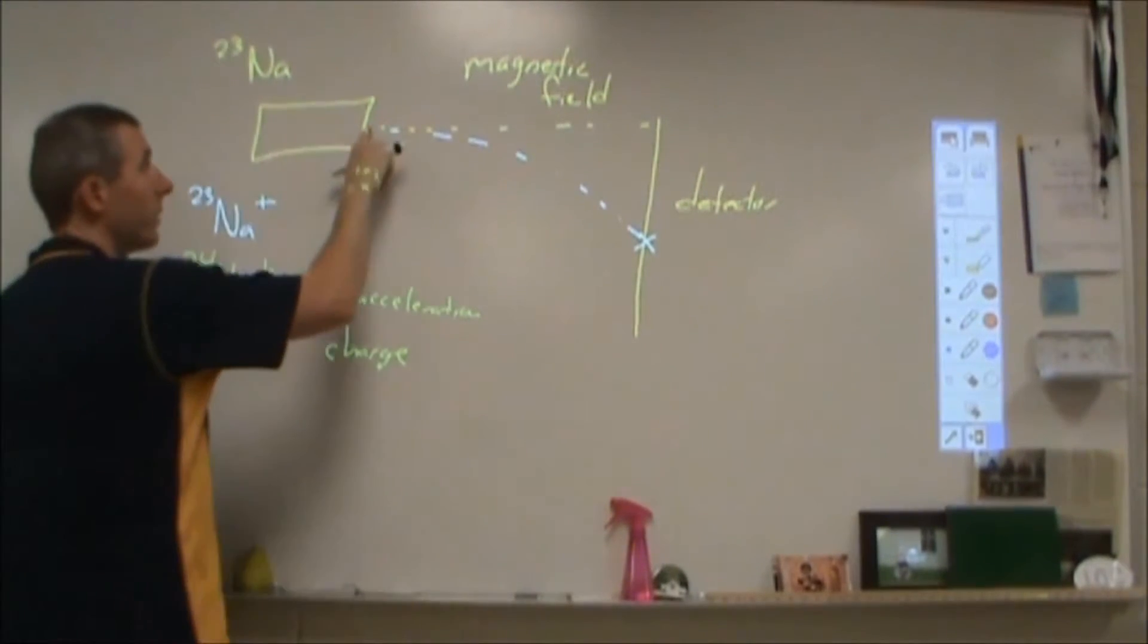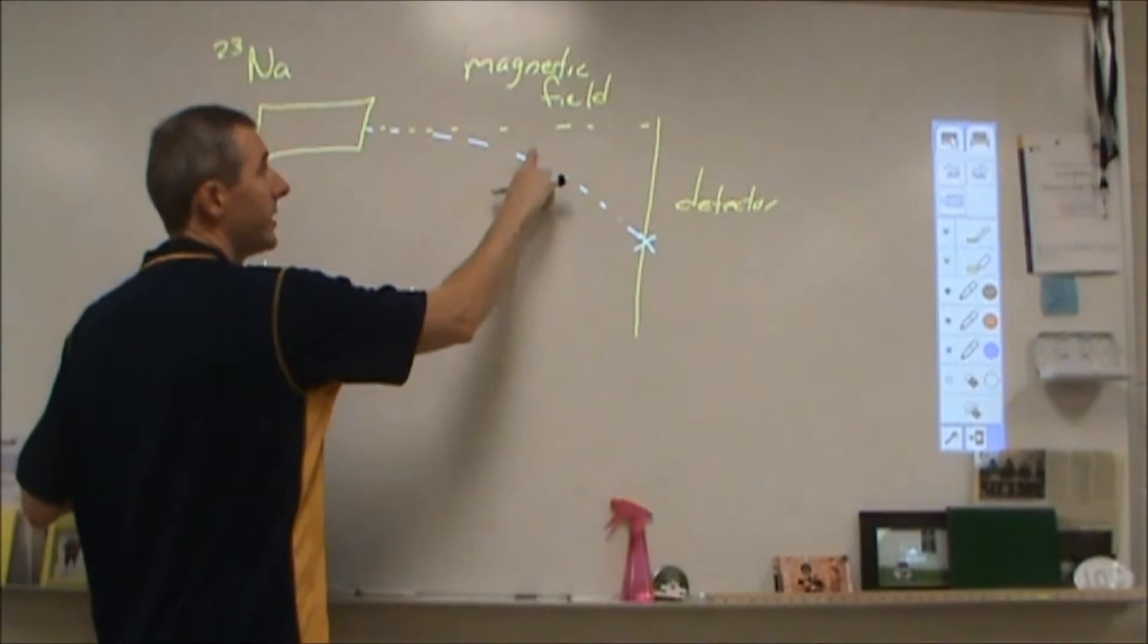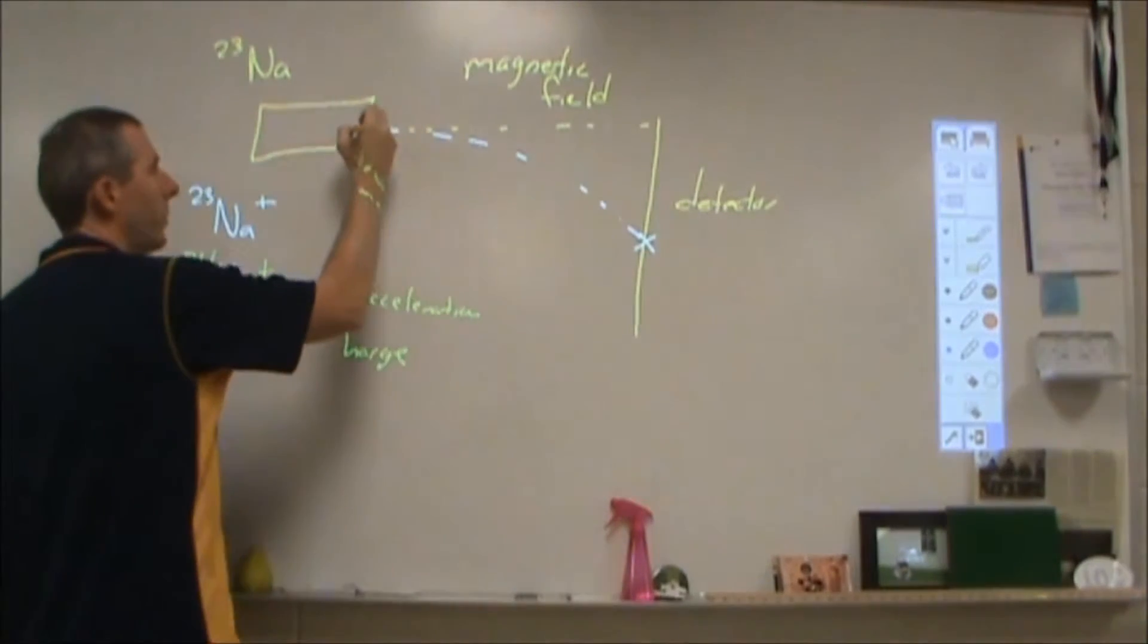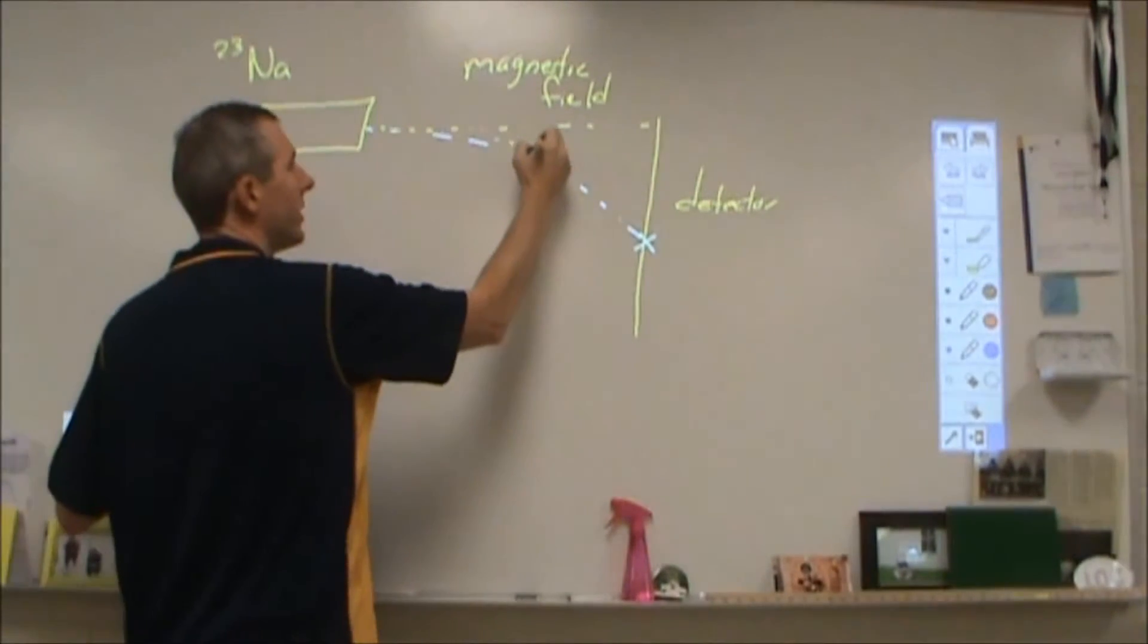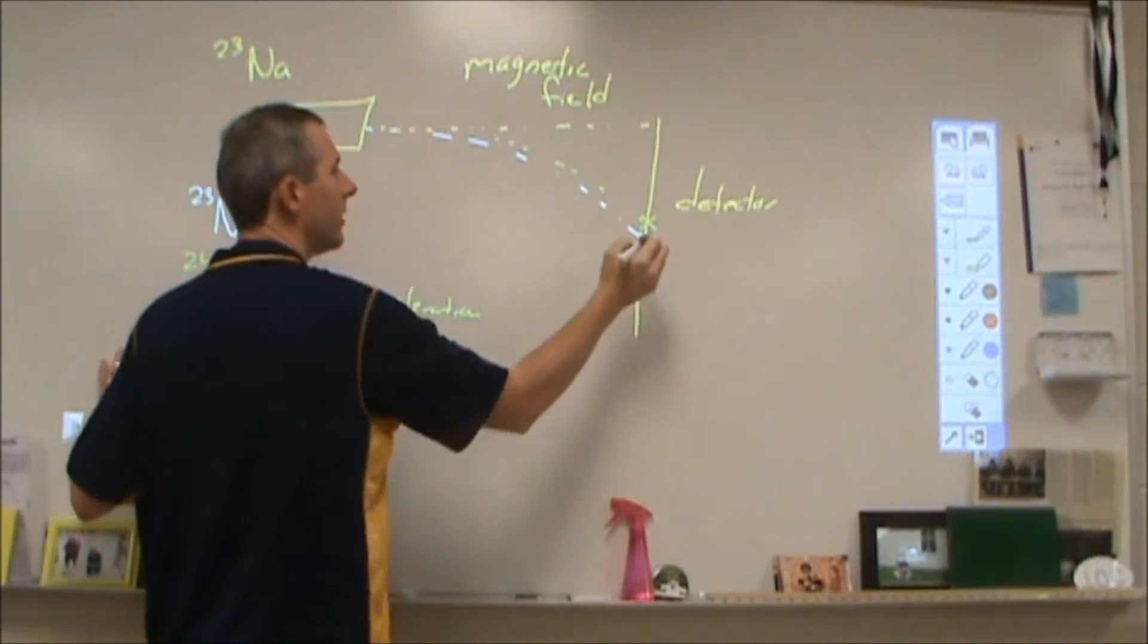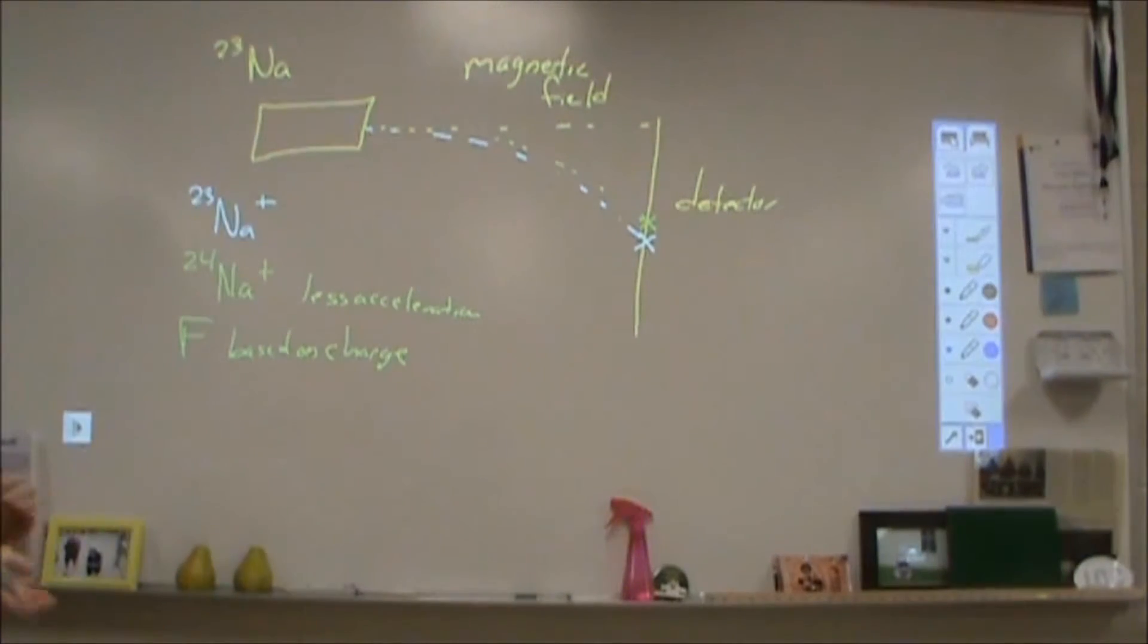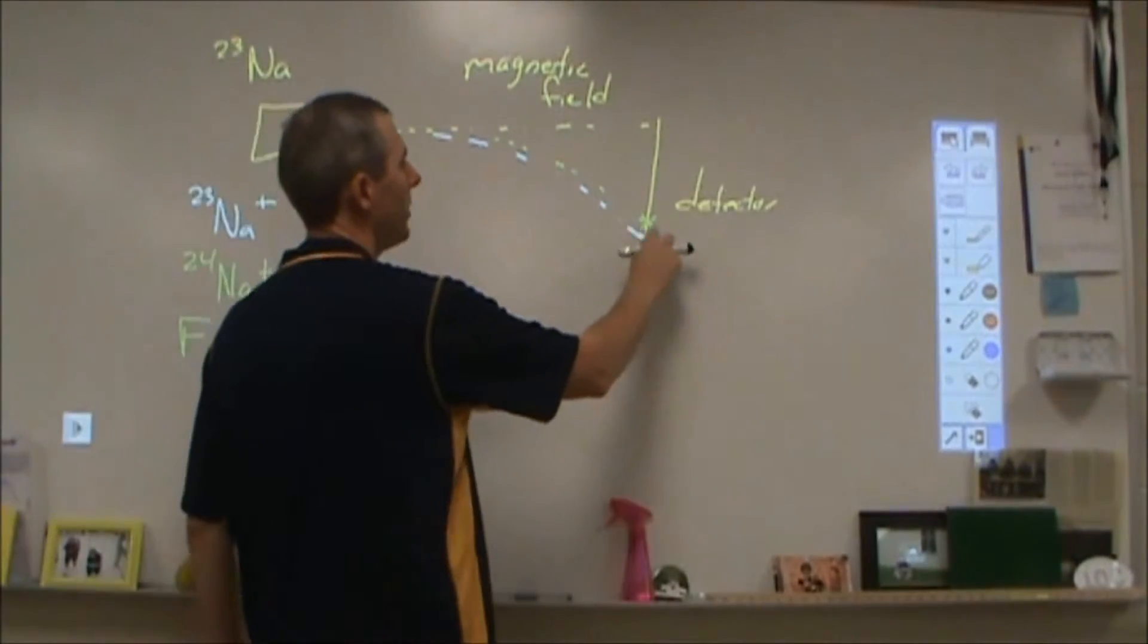And so because this has more mass with the same force, this will have less acceleration, which means it's going to be more difficult to cause this to change its velocity. It's not going to deflect as much. So we're going to see it hit at a slightly smaller deflection than the other.